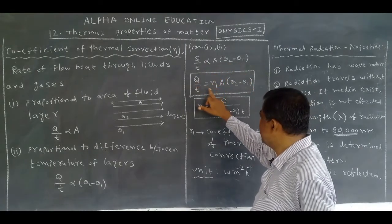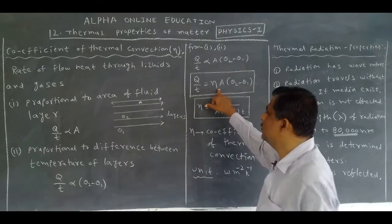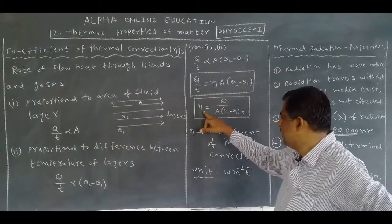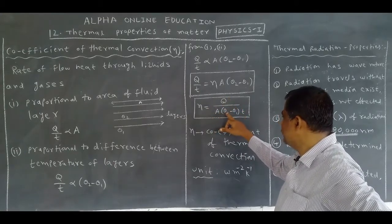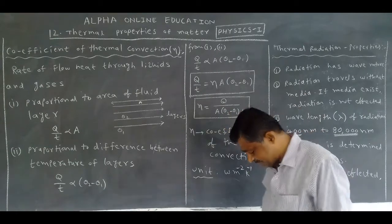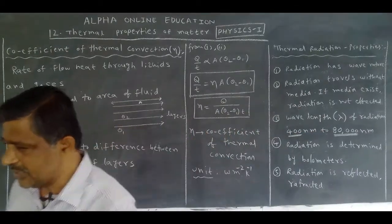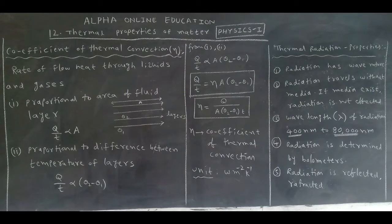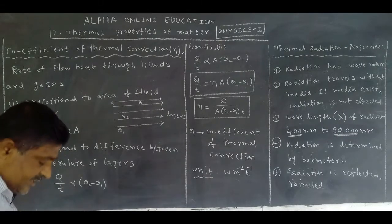When we remove the proportionality sign, we introduce a constant called the Coefficient of Thermal Conduction. The unit of this coefficient is W m⁻² K⁻¹. This may be important for a two-mark question. The types of convection are also important.